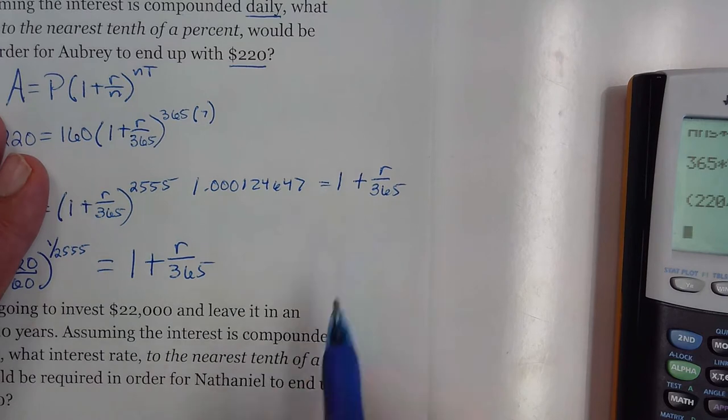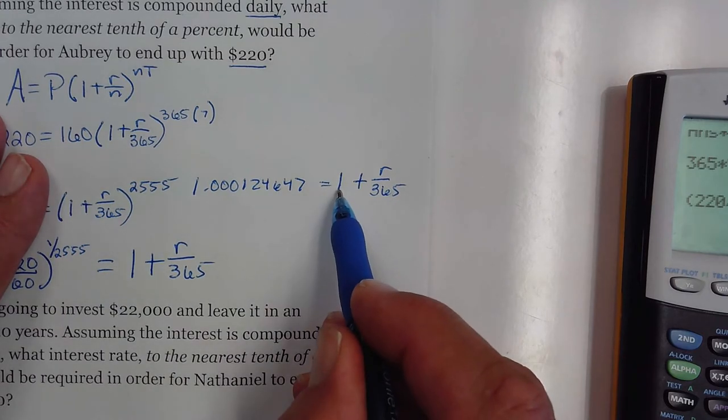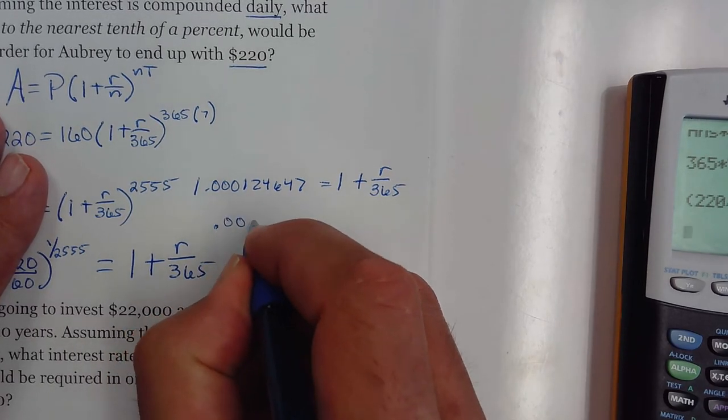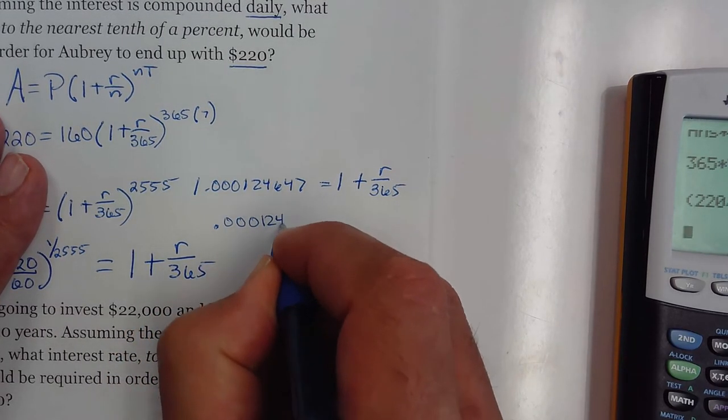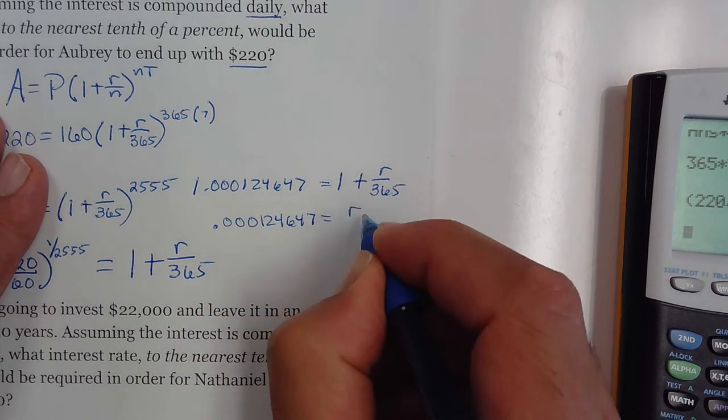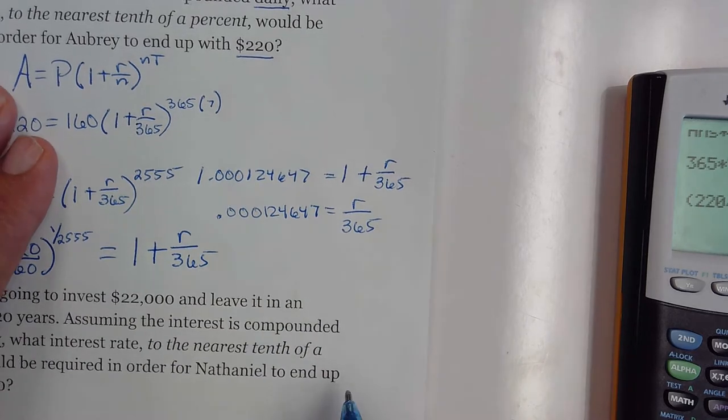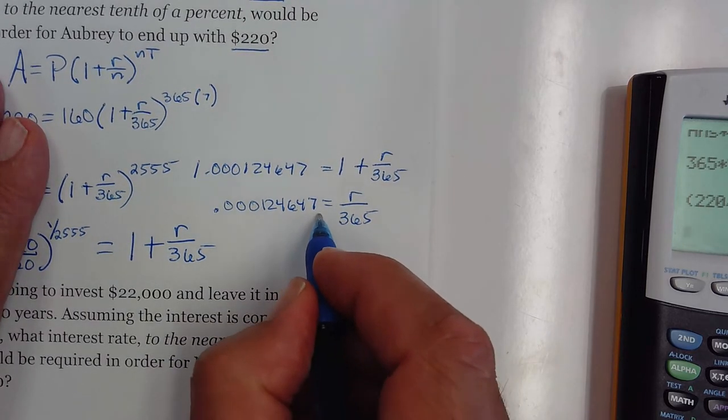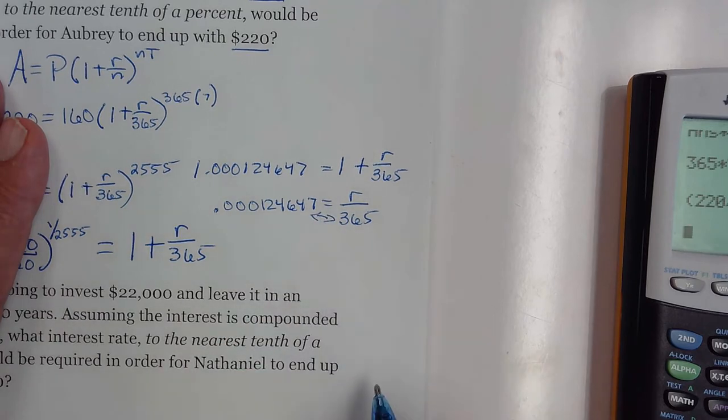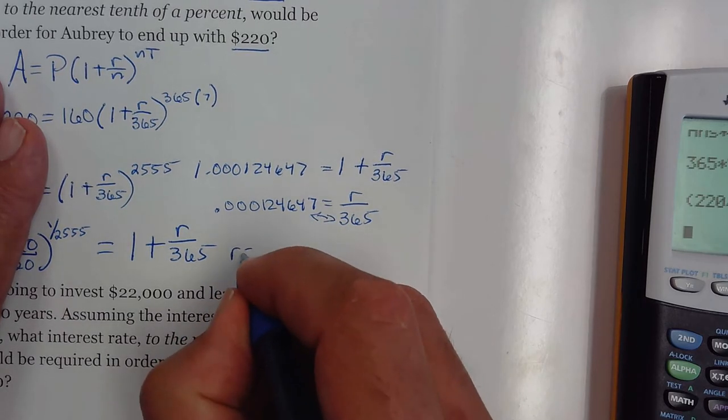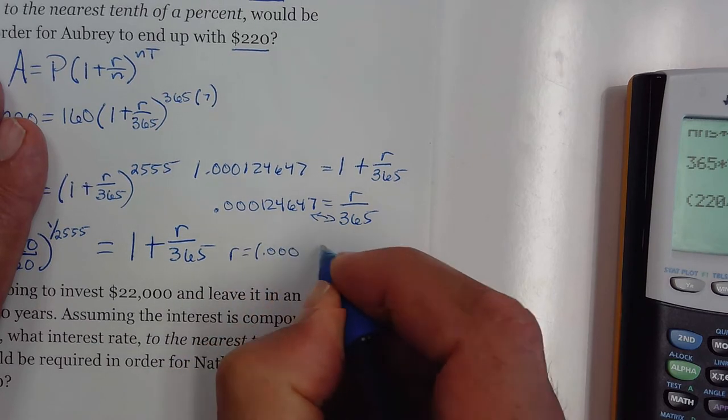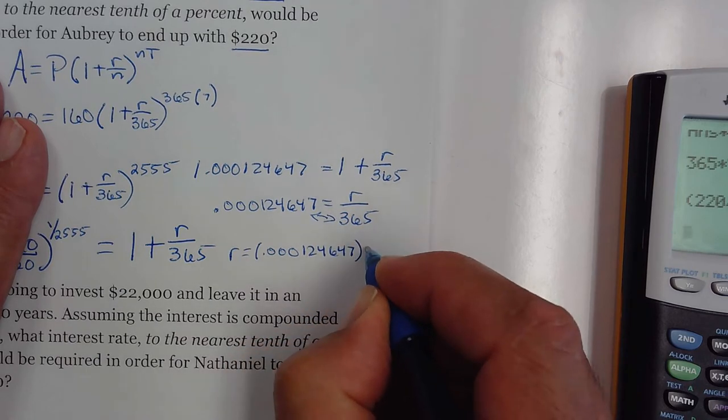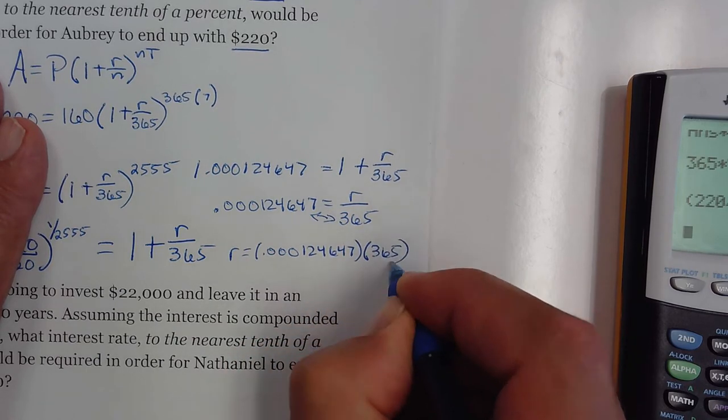Now at this point you just have a simple equation. What you need to do is subtract one from that, which means the only thing we're going to have left is the decimal portion, and that's going to equal the rate divided by the compounding frequency which is 365. Your last step, you just need to cross multiply there. So the rate is going to equal 0.000124647 times 365.